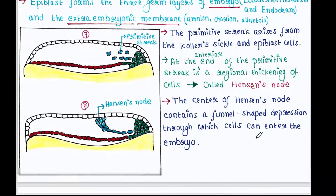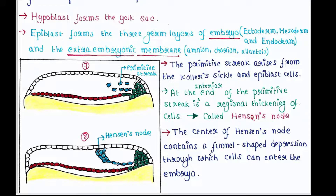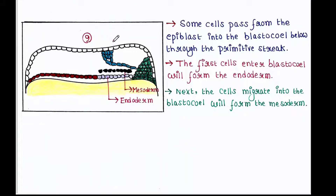The primitive streak arises from Koller's sickle and epiblast cells. At the anterior end of the primitive streak is a regional thickening of cells called Hensen's node. The center of Hensen's node contains a funnel-shaped depression through which cells can enter the embryo. Some cells pass from the epiblast into the blastocoel through the primitive streak to form the endoderm; cells that migrate into the blastocoel next will form the mesoderm.